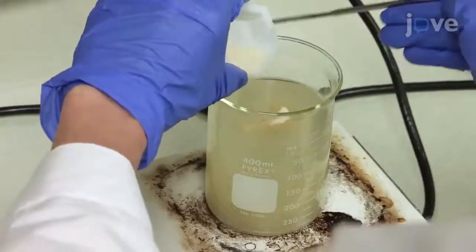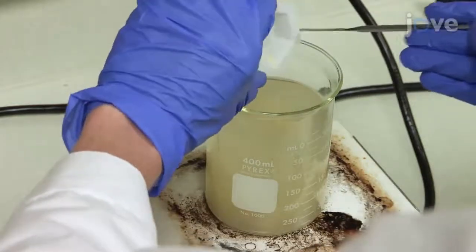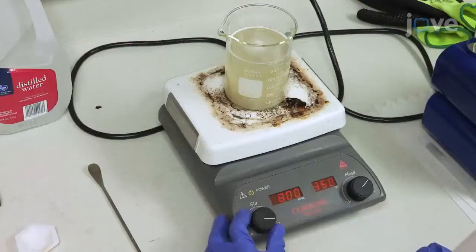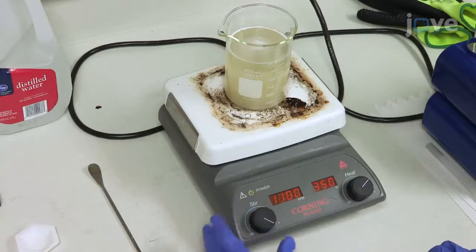Then, slowly spoon the 9.0 grams of agar with a spatula into the beaker with water. Once everything has been added to the water solution, increase the hot plate temperature to 350 degrees Celsius and stir bar speed to 1100 rpm.